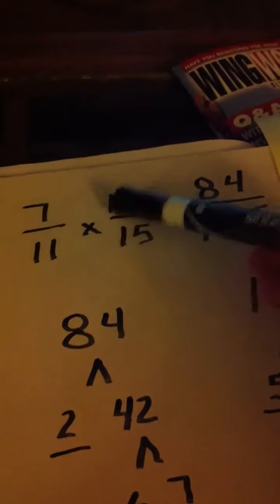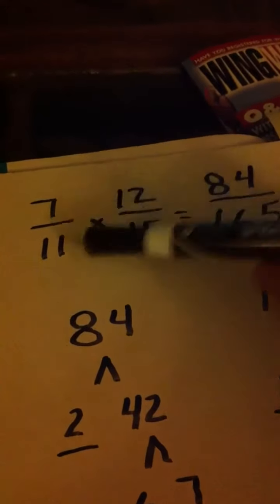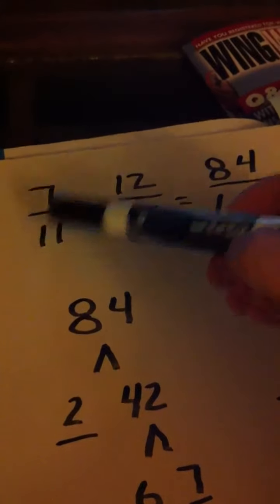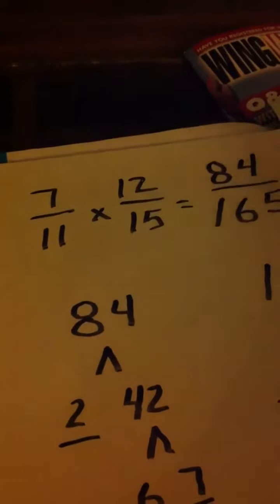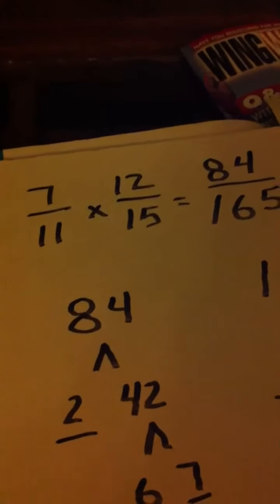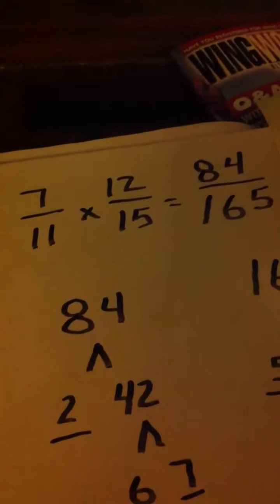Remember you cross simplify, look at these terms that are diagonal and see if there's anything that's common, if so you reduce it. This one doesn't have anything either. There's nothing common between 11 and 12 and there's nothing common between 7 and 15. So according to the rules that I've been telling you or that we've been taught, just multiply straight across.